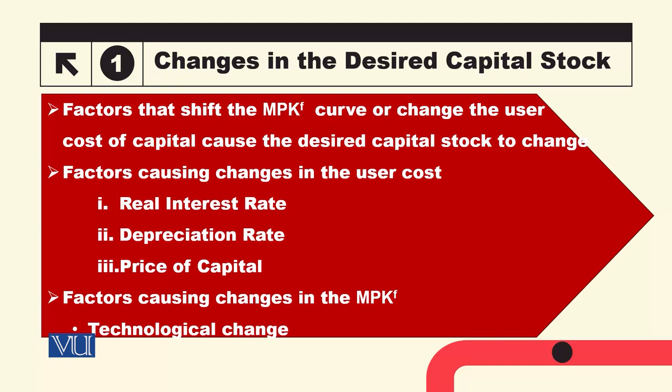One is that we have to pay for financing — the interest payment. The interest payment depends on the price of capital. If the price of capital increases, then obviously the interest payments will also increase. Similarly, if the interest rate changes, the interest payments will change. This will affect the desired level of capital stock.